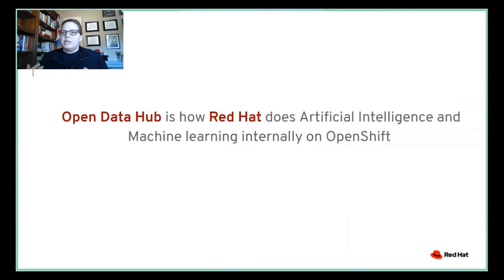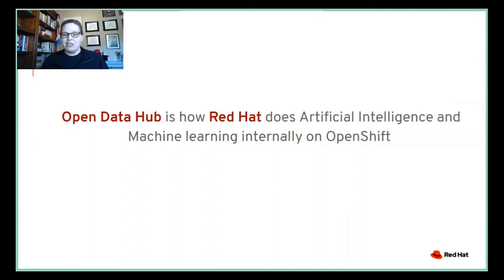Open Data Hub is really how Red Hat does artificial intelligence and machine learning internally on OpenShift. We've learned quite a lot from running machine learning workflows on OpenShift.